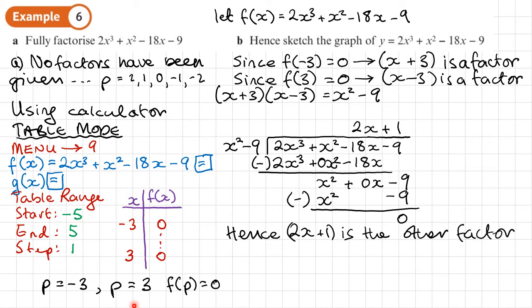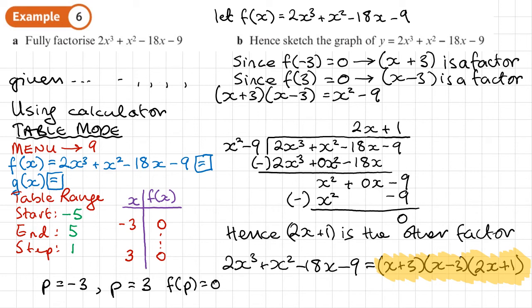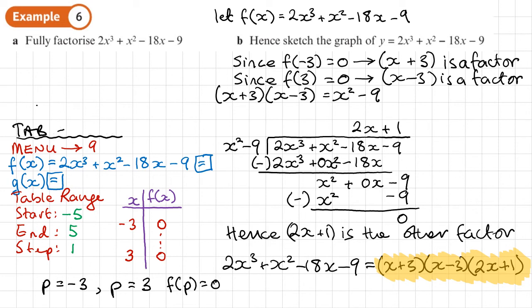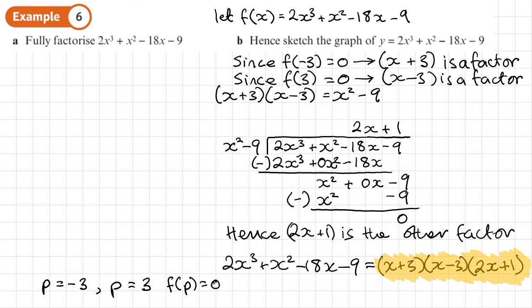So to fully factorise 2x cubed plus x squared minus 18x minus 9, we write it in three brackets: x plus 3, x minus 3, and 2x plus 1. This is now fully factorised. We'll move on to part b, which asks us to sketch the graph, so we need to create a bit of space.